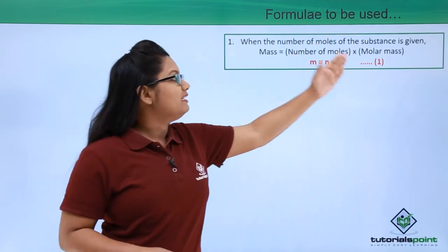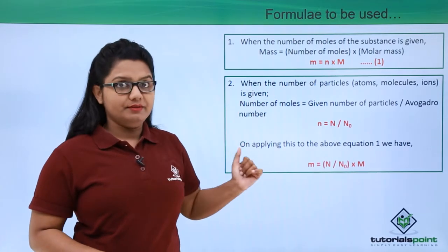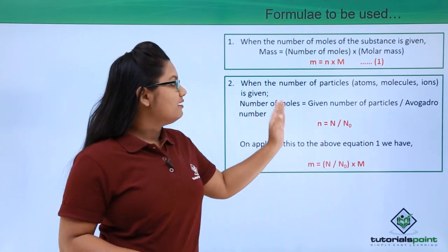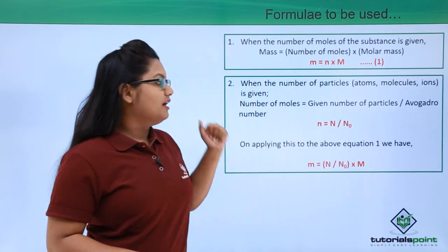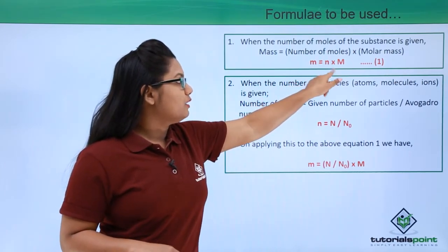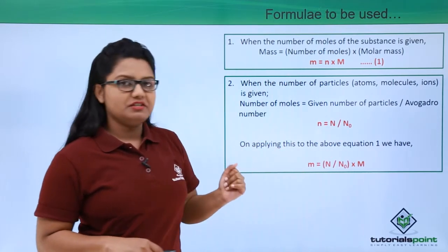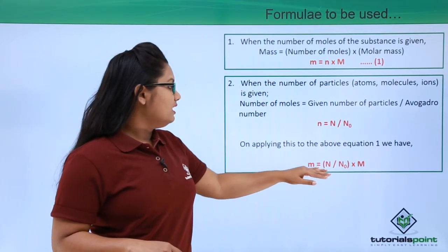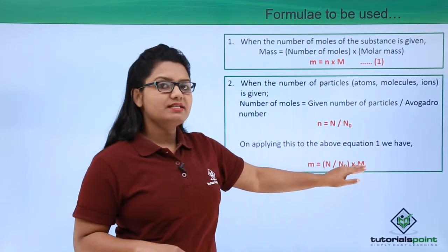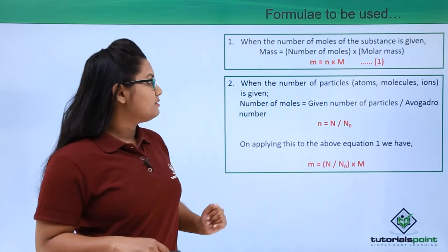We call that Formula 1. When the number of particles — atoms, molecules, or ions — is given, the number of moles equals the given number of particles divided by Avogadro's number. Substituting into Formula 1 gives us: m = (N / N₀) × M. This is Formula 2, used when the number of particles is given.